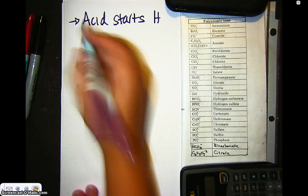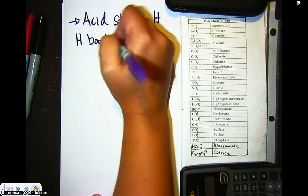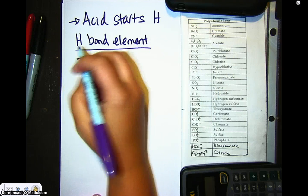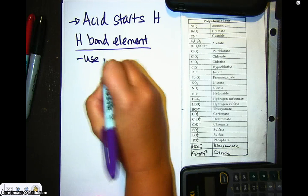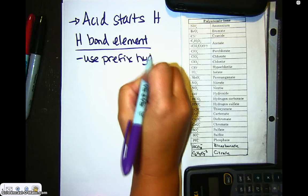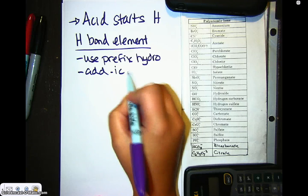So when we have hydrogen bonding with an element, we are going to use a prefix hydro. So we use a prefix hydro and we add an -ic ending.